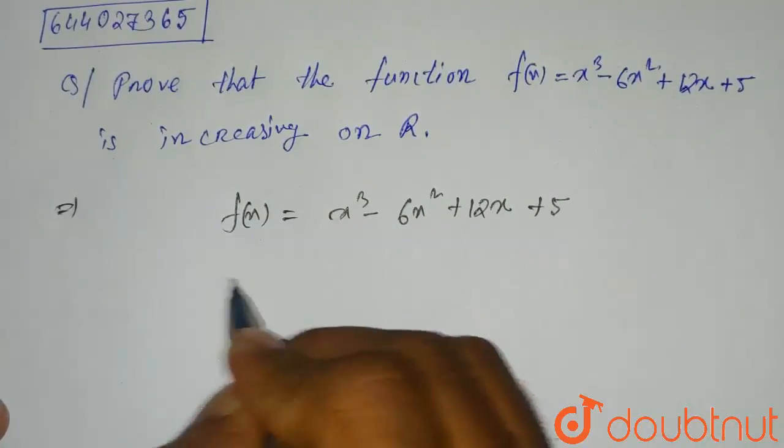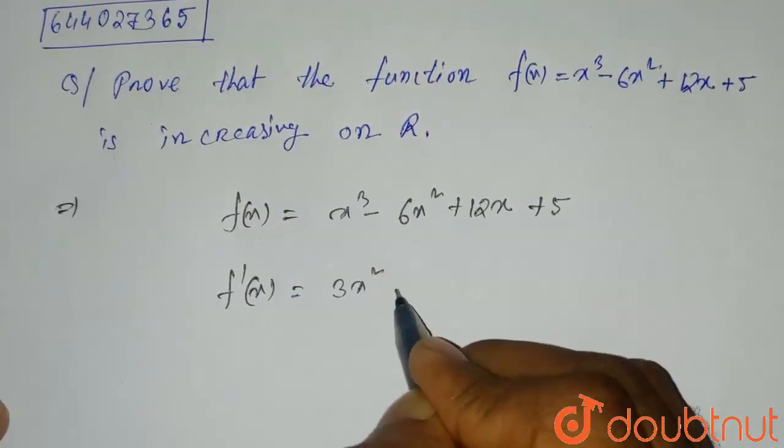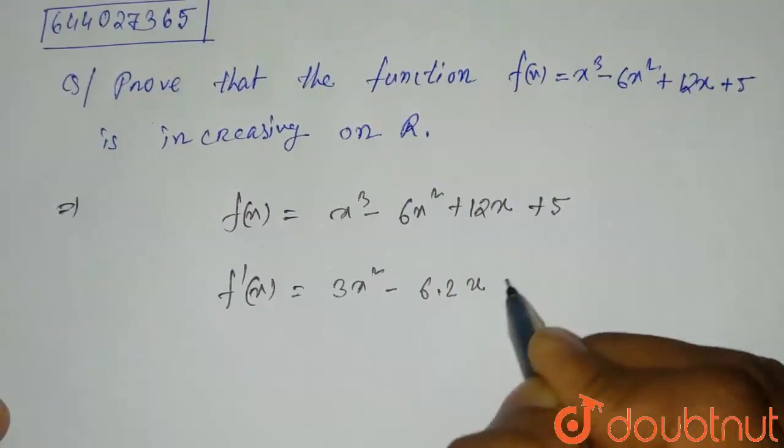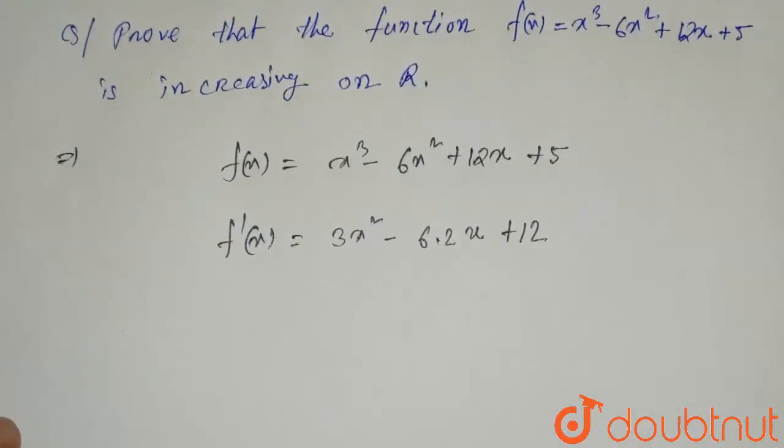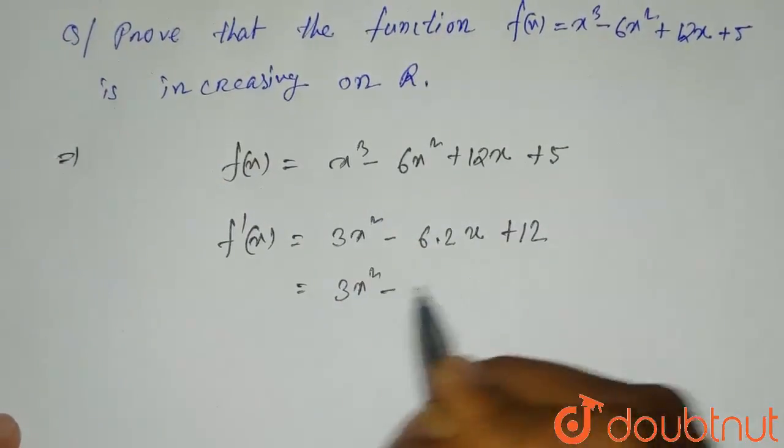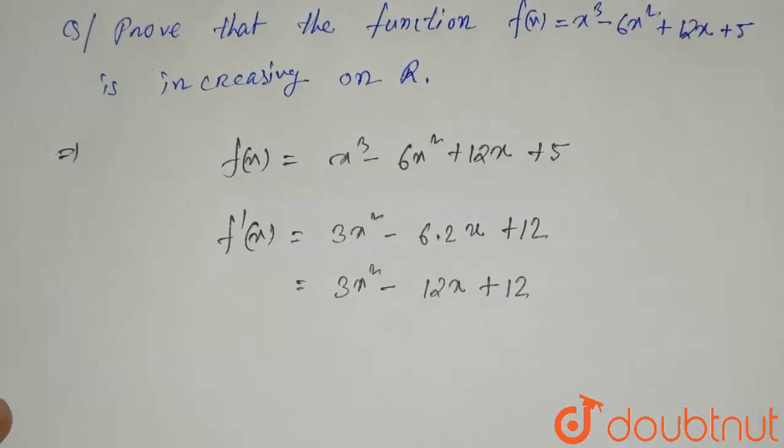After differentiating, f'(x) equals: x³ becomes 3x², minus 6 into 2x, plus 12. This is a simple differentiation which equals 3x² - 12x + 12.